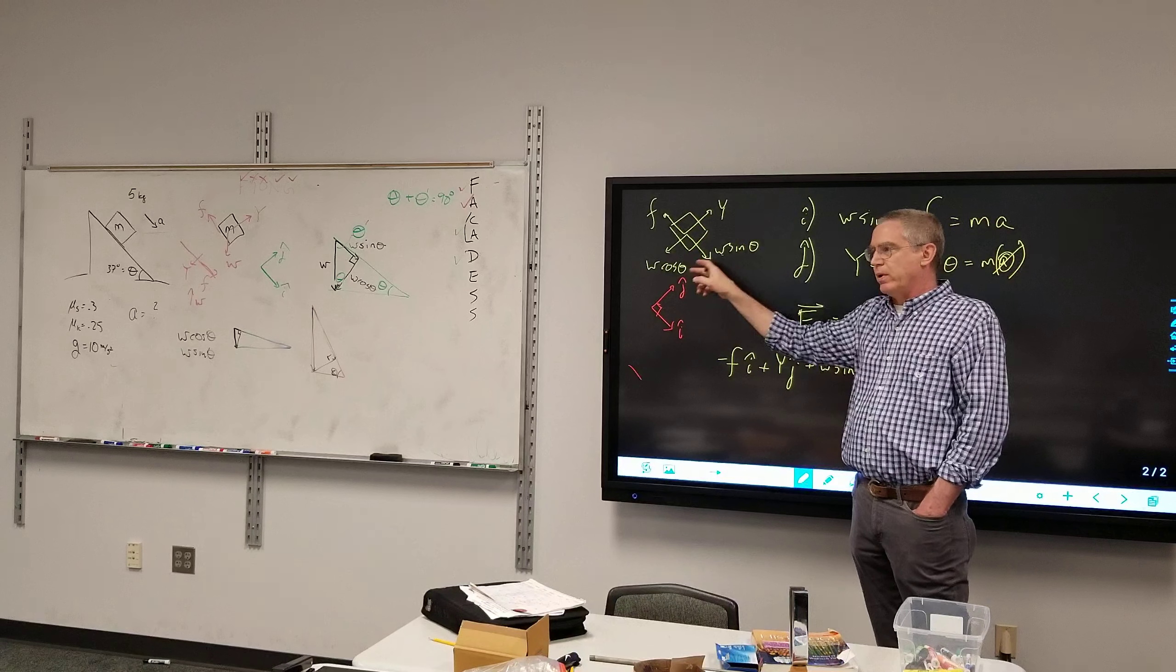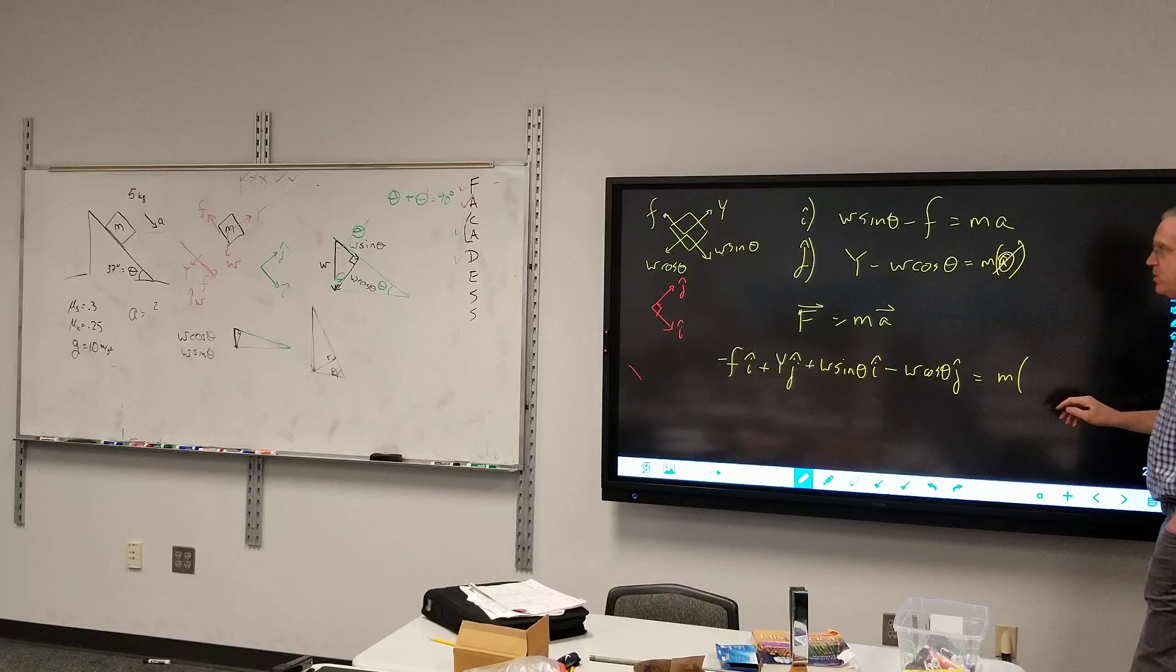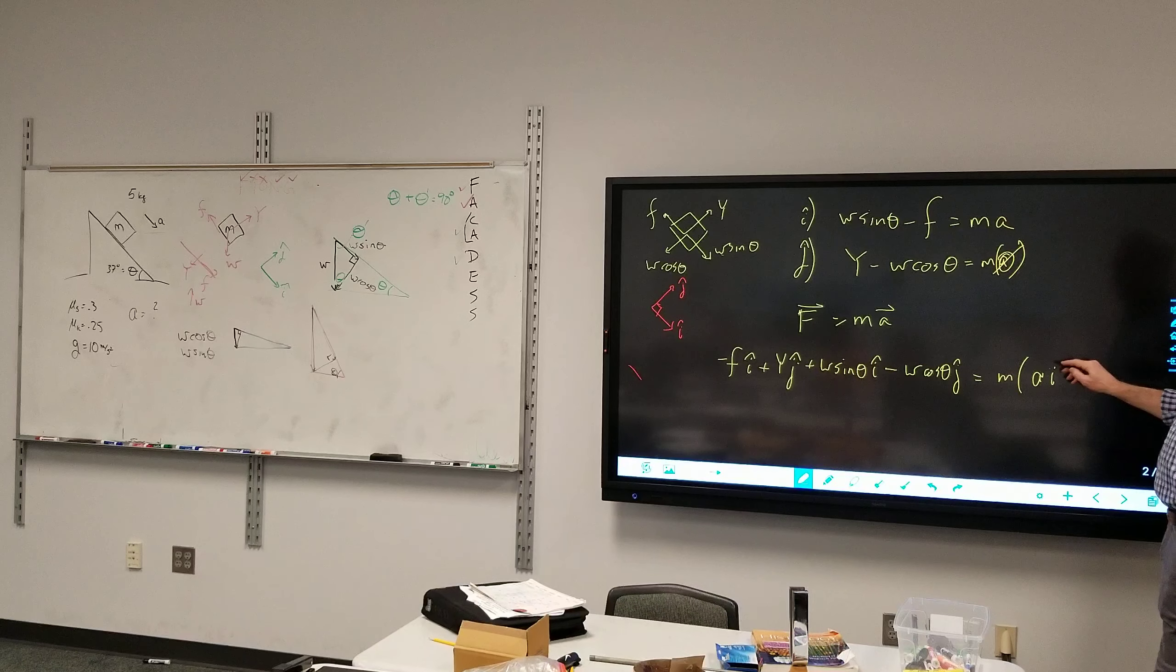Negative f i-hat plus y j-hat plus w sine theta i-hat minus w cosine theta j-hat. So I just started here, just worked my way around, is equal to the mass times the acceleration, which is a, that's the magnitude, i-hat.